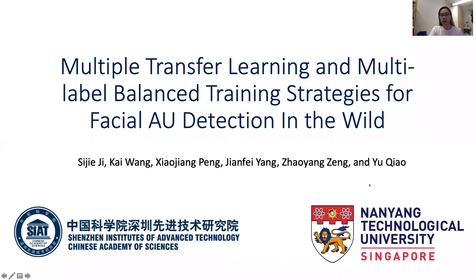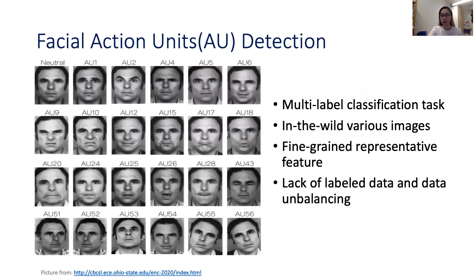Hello everyone, I'm Sijie. It's my great pleasure to give a talk here today and hope everyone stays safe and enjoys our webinar. The work I'm going to share is the third place solution of this year's EmotioNet challenge. We called it multiple transfer learning and multi-level balanced training strategies for facial AU detection in the wild. This is joint work with Kai, Xiaojian, Jianfei, Zhao Yan, and Professor Yu.